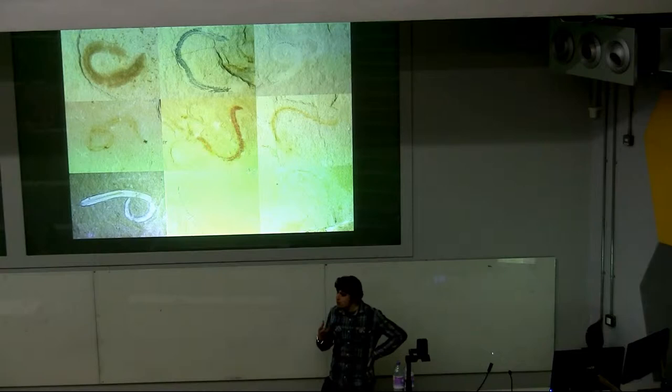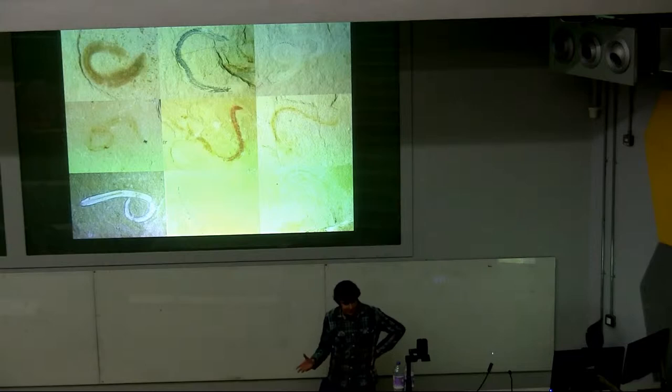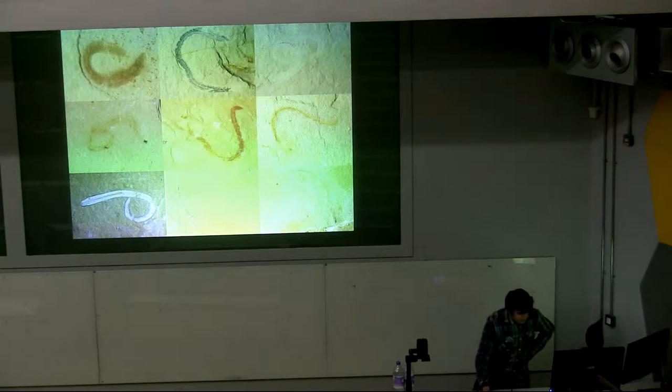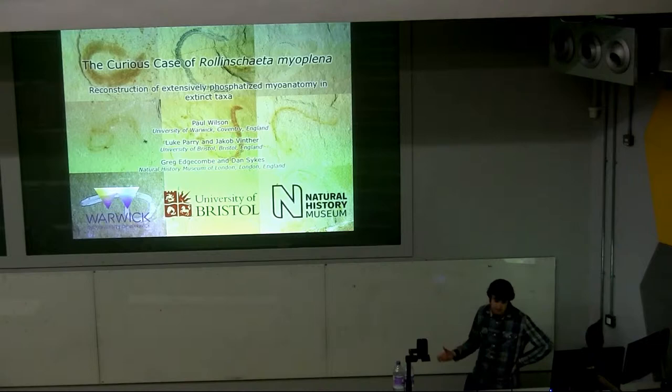A very unusual polychaete in the fact that it preserves almost the entirety of its muscle tissue in three dimensions, but completely lacks all of its hard recalcitrant structures that make up the vast majority of the polychaete fossil record. So it provides a very bizarre case study in the oddities of the taphonomic process of phosphatisation. I'm proud to present the curious case of Rollins Ketomyoplina and the reconstruction of phosphatised myoanatomy within the fossil record.